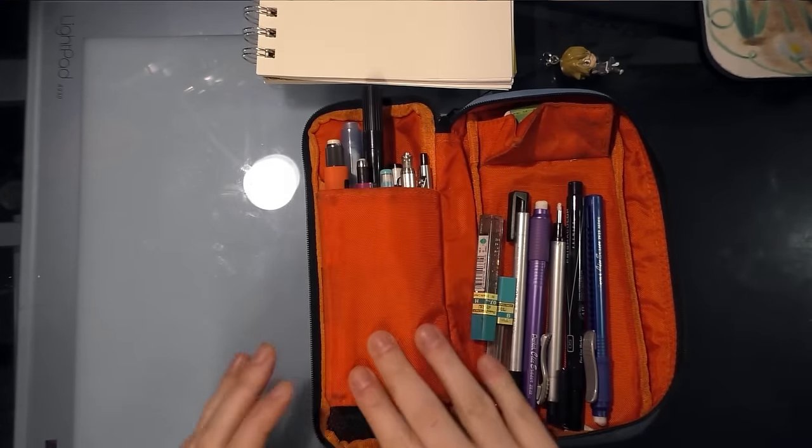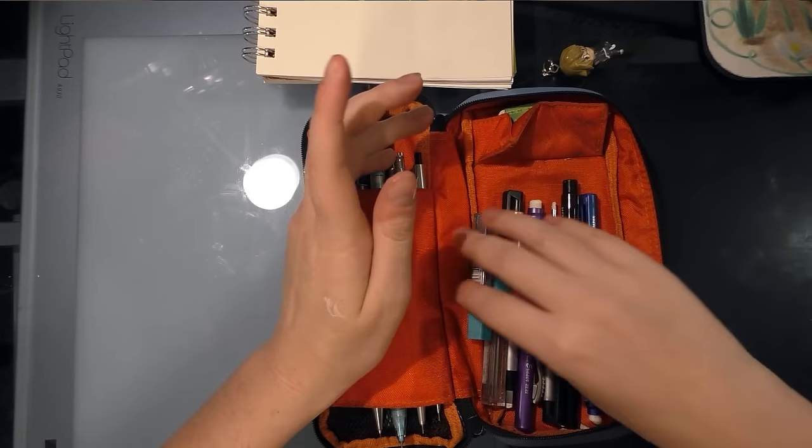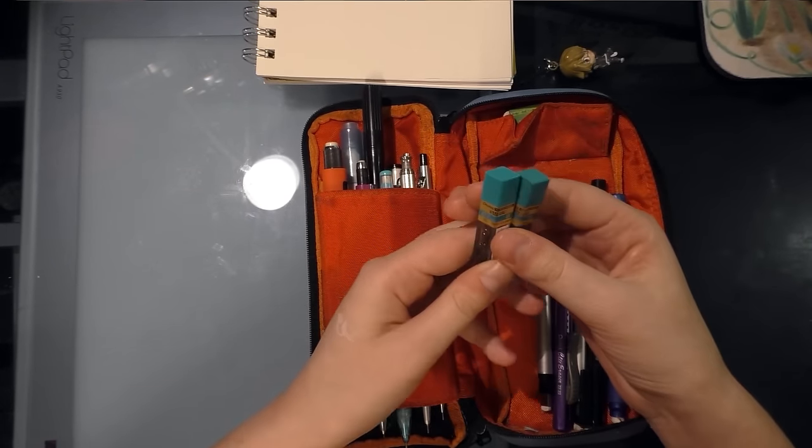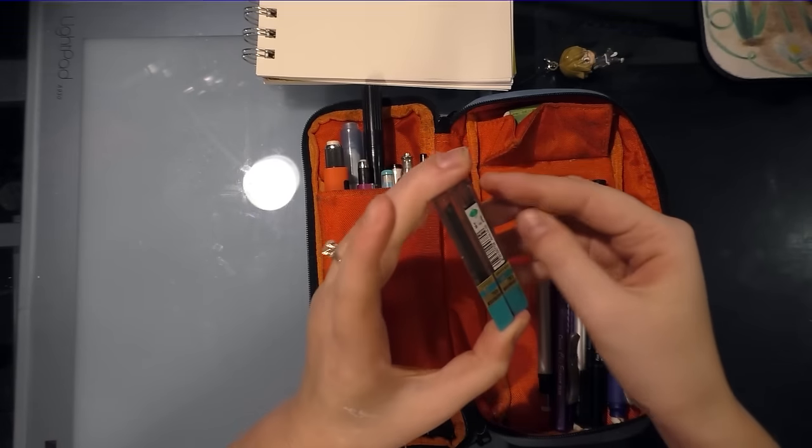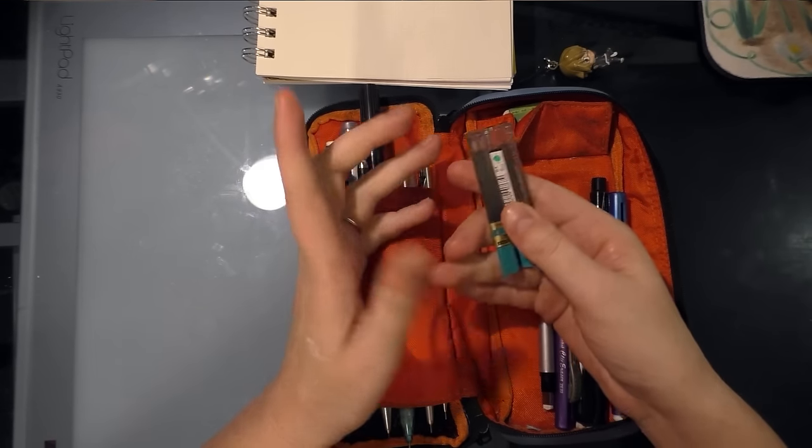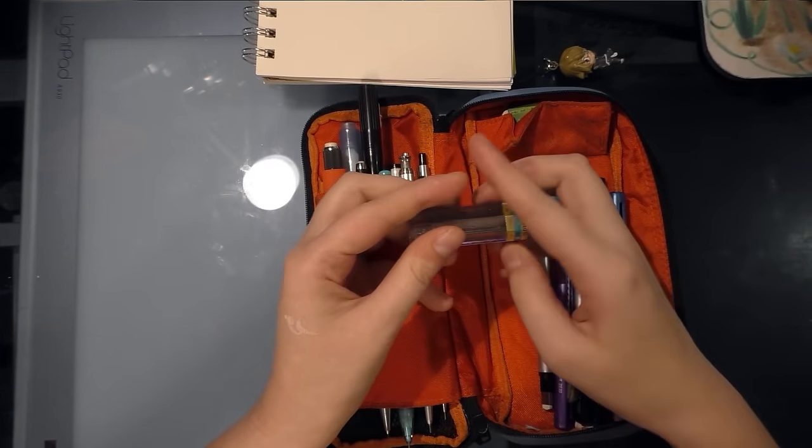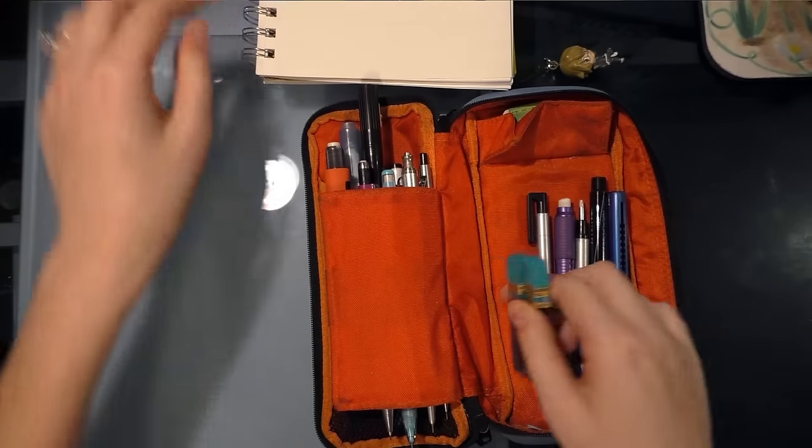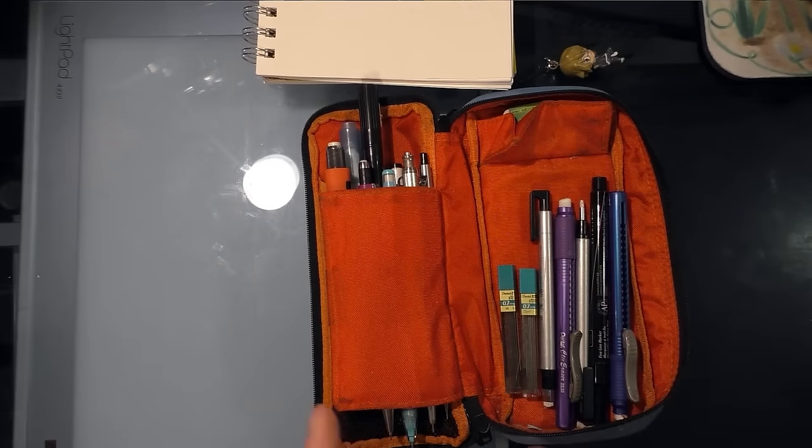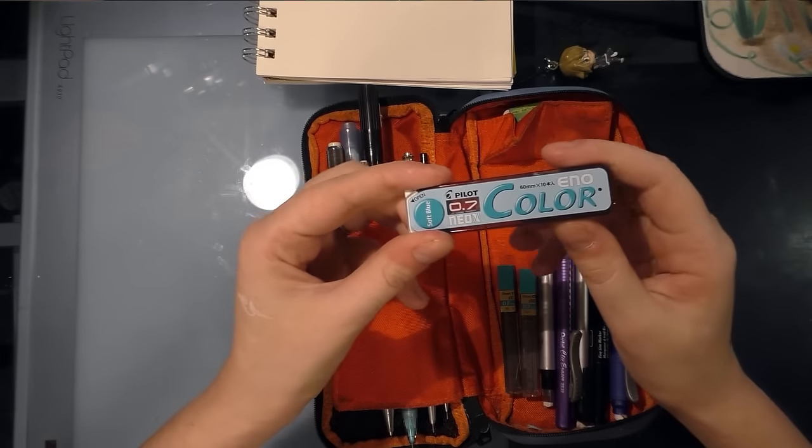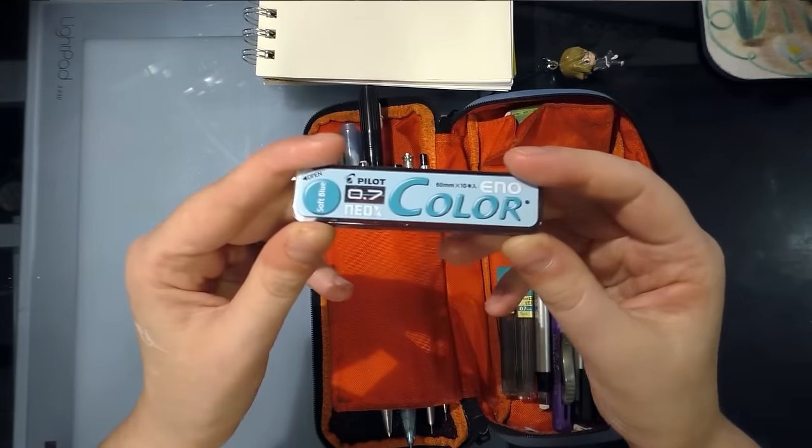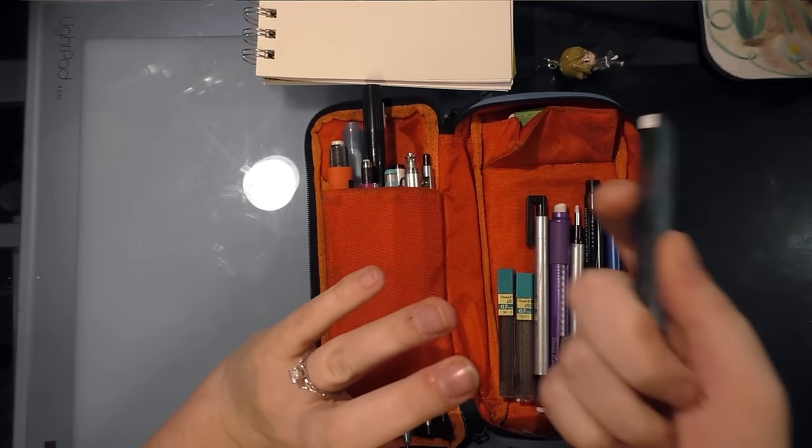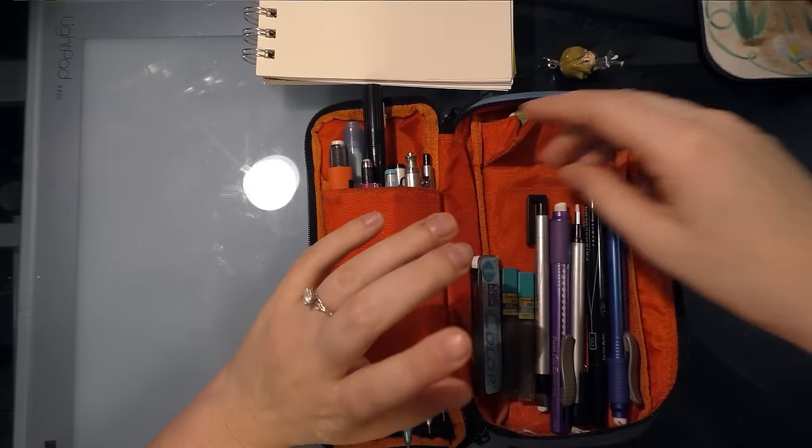So under here I keep spare leads, so 2B and H. It's Pentel Hi-Polymer. I've tried a variety of other leads, a variety of other leads are fine. I find these are easy to find and they suit my purpose. I also have, it should be in my case but it's not right now, refill leads for my Color Eno. And I try to buy as many of these as possible at any one time. I never just buy one pack because I go through these really quickly.